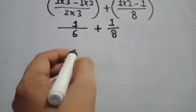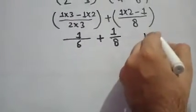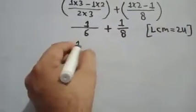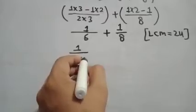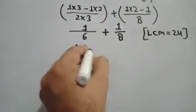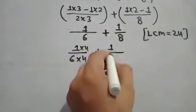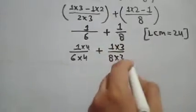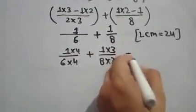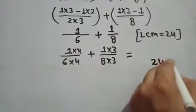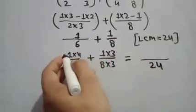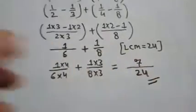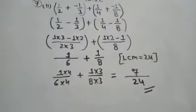LCM is 6, 3 minus 2 equals 1, so 1/6. Plus 2 times 2 minus 1 equals 1/8. Now the LCM of 6 and 8 is 24. 1/6 multiply 4 plus 1/8 multiply 3. So 24 is the LCM and 4 plus 3 equals 7/24, which is the result of this question.